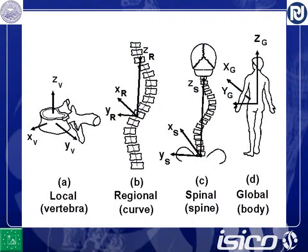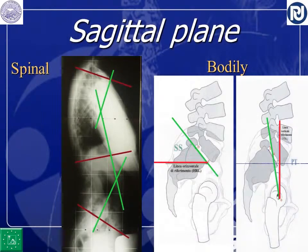The SRS first recognizes that there exists a global and a spinal view that are different. The spinal view is usually used when we evaluate radiographs, and it is different from the bodily one. Recently, looking at the sagittal plane, a bodily view has been introduced when we look at the pelvic parameters — meaning looking at how the spine changes according to the gravity line.